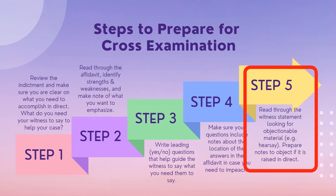The fifth and final step is to look through the witness statement for objectionable material and prepare notes to object during the direct examination. While the witness you'll cross-examine is being directly examined, listen with a critical ear to make sure the opposing attorney isn't questioning the witness about things they're not allowed to question them about — such as hearsay, speculation, or opinion on the ultimate issue. Successfully objecting might get parts of the witness's testimony stricken from the record.